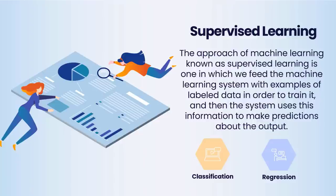Let's explore supervised learning first. In supervised learning, we feed the machine learning system examples of labeled data in order to train it, and then the system uses this information to make predictions about the output. After training and processing, the system will create a model with labeled data to comprehend and gain knowledge about each data point. The model will then be tested by providing sample data to determine whether it is accurately predicting the output. The goal of supervised learning is to create a mapping between input data and output data. Spam filtering is an illustration of supervised learning in action. The two kinds of algorithms under supervised learning are classification and regression.